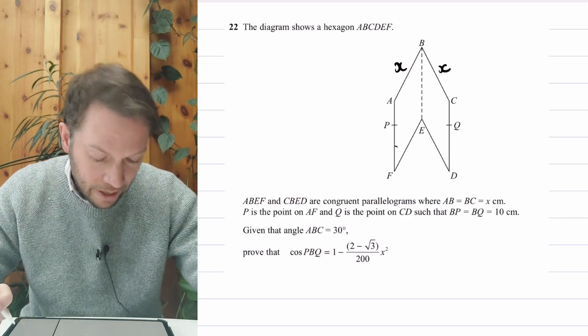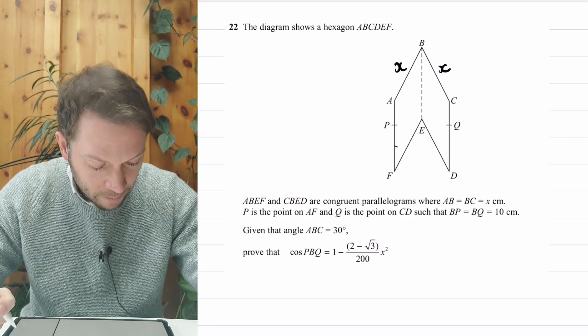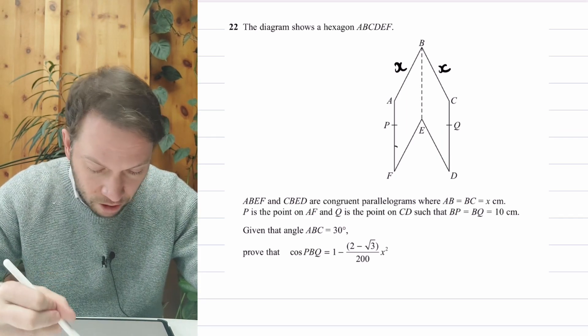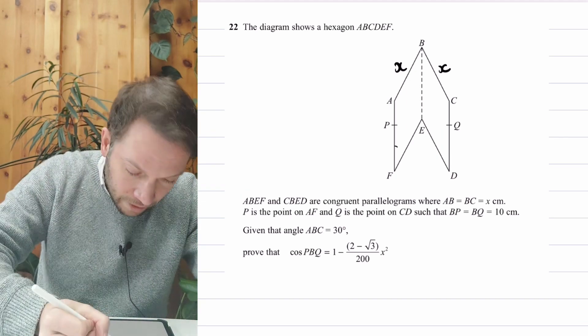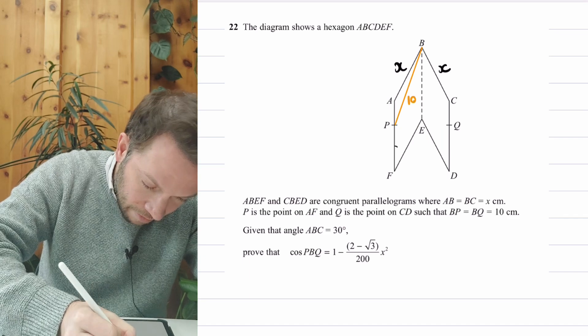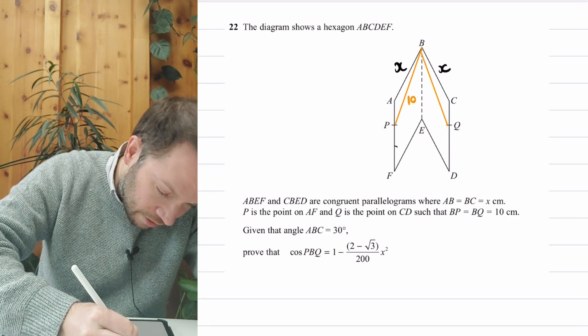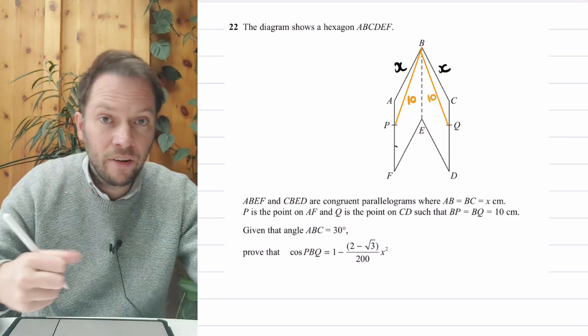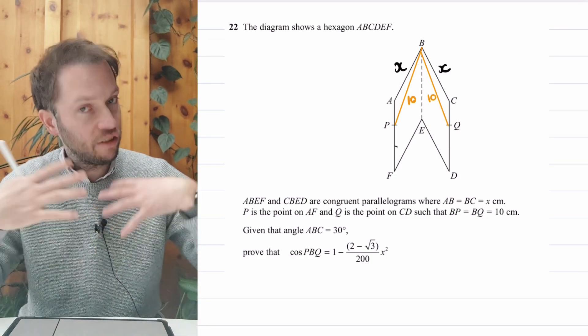And P is a point on AF. And Q is a point on CD, such that BP equals BQ equals 10. Again, I'm just going to draw that on. So the length of BP is equal to 10 and the length of BQ is equal to 10. So in general, when you've got a diagram and they give you information and the information is not on the diagram, it really helps to visualize it by writing that information on the diagram.